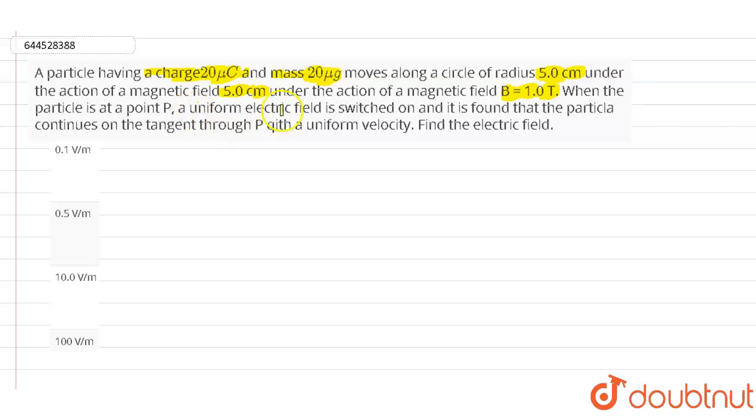When the particle is at the point, a uniform electric field is switched on and it is found that the particle continues on the tangent through point P with a uniform velocity. So find the electric field. Here we need to find out the electric field value from the given data.